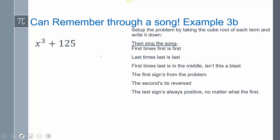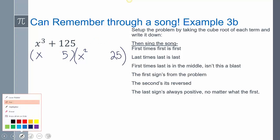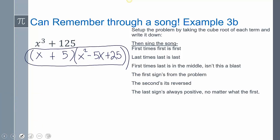So, we set it up. All we have to do is just take the cube root. Cube root. Now we go ahead and sing the song. First times first is first. So, x times x is x squared. Last times last is last. So, 5 times 5 is 25. First times last is in the middle, isn't this a blast? The first sign's from the problem. The second's it's reversed. And the last sign's always positive no matter what the first. And it's factored.